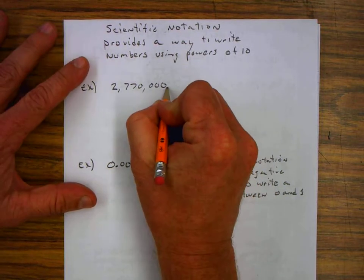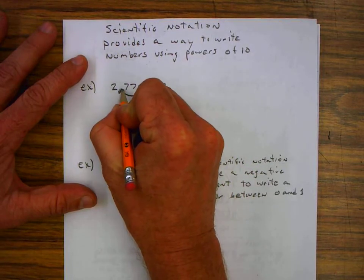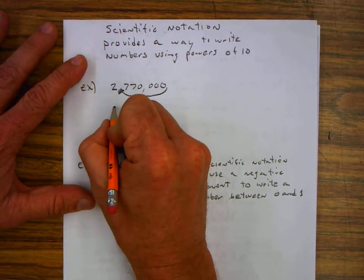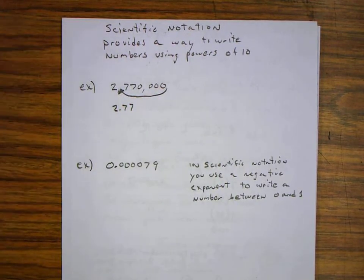So our decimal is here, and to do that we're going to move it right here to this point. It's greater than 1 but less than 10. So we end up with 2.77. We drop the 0's after the 7. That's our second step.